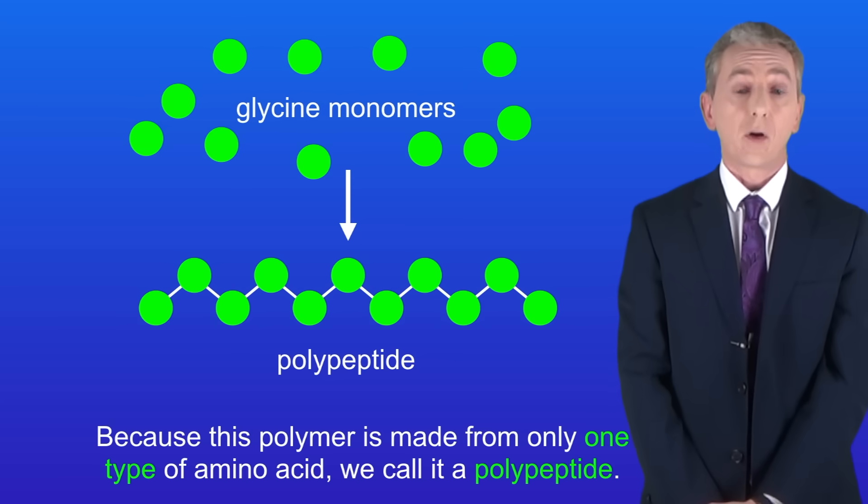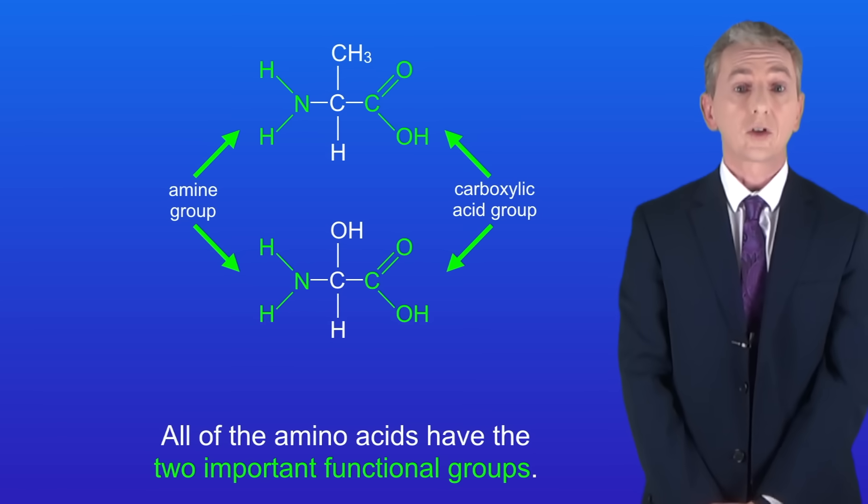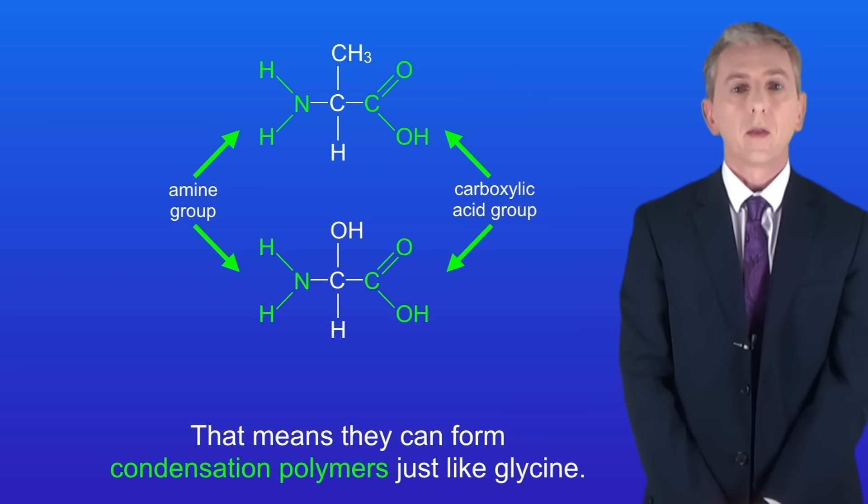However you need to understand that there are many different amino acids. I'm showing you two different amino acids here but I should point out that you don't need to know these. The key point is that all of the amino acids have the two important functional groups. In other words the amine group and the carboxylic acid group. That means that they can form condensation polymers just like we saw with glycine.